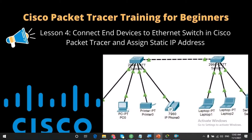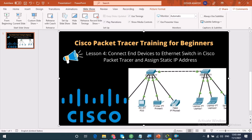This is the fourth lesson of the Cisco Packet Tracer training for beginners. If you've missed the first video on how to download and install Cisco Packet Tracer, the second video on how to bring up the Cisco IOS, or the third video on how to configure hostname, banners, line password, and password encryption for your Cisco device, the links to these tutorials are in the description.